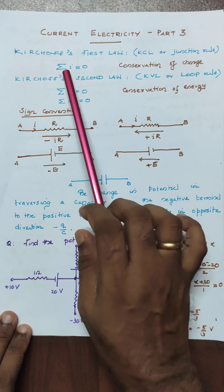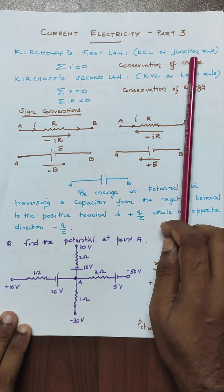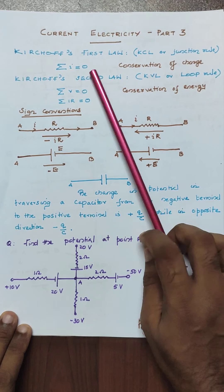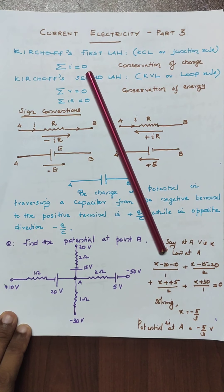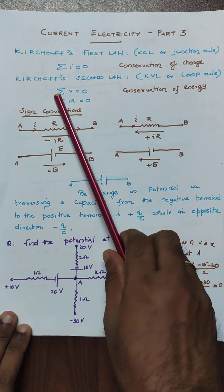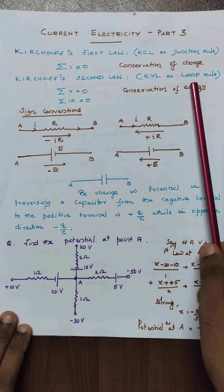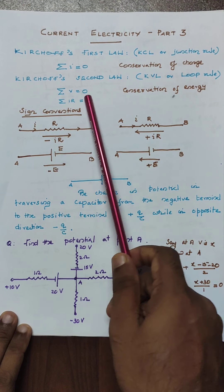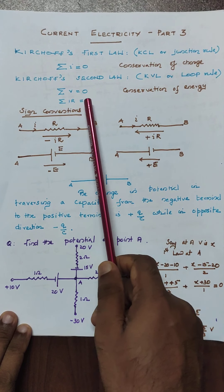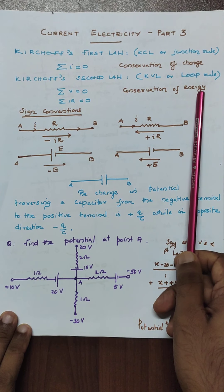You should go through Kirchhoff's first law — the current law or the junction rule — and keep in mind that sigma I should equal to zero. This is based on the conservation of charge. Kirchhoff's second law, or the voltage law or the loop rule: sigma V, or sigma I into R, should equal to zero, and it is based on the conservation of energy.